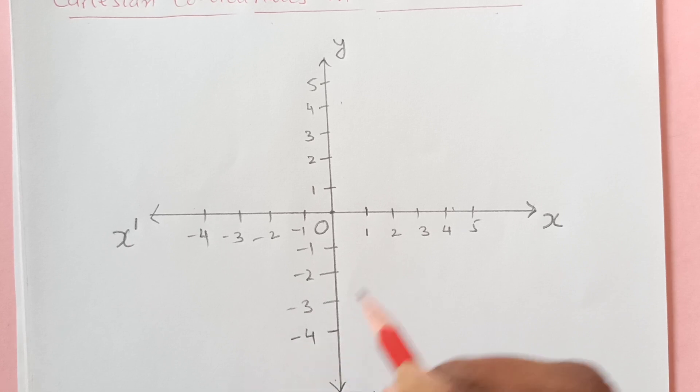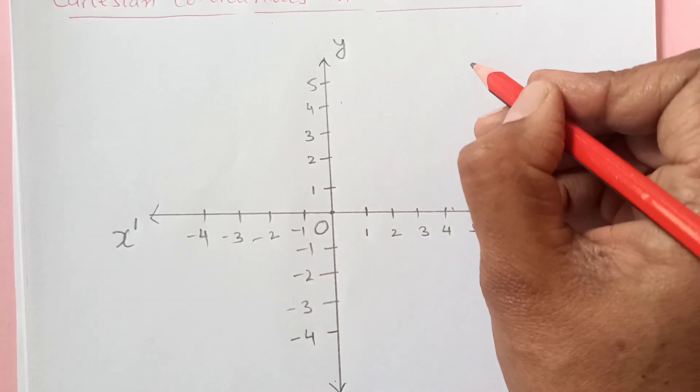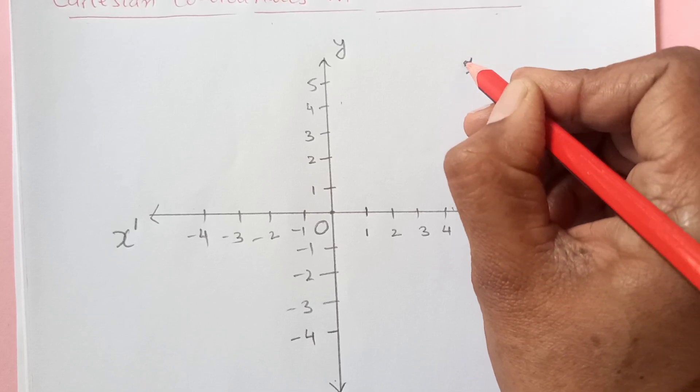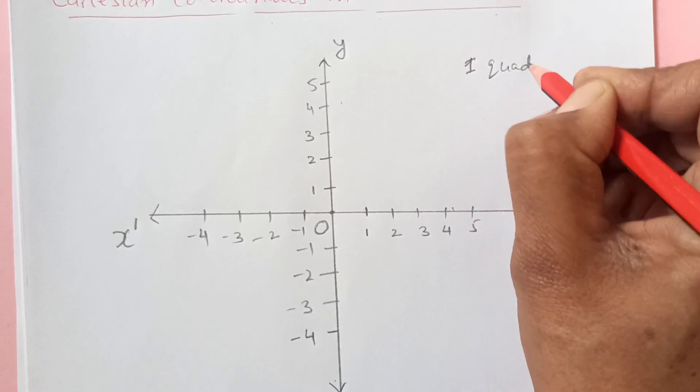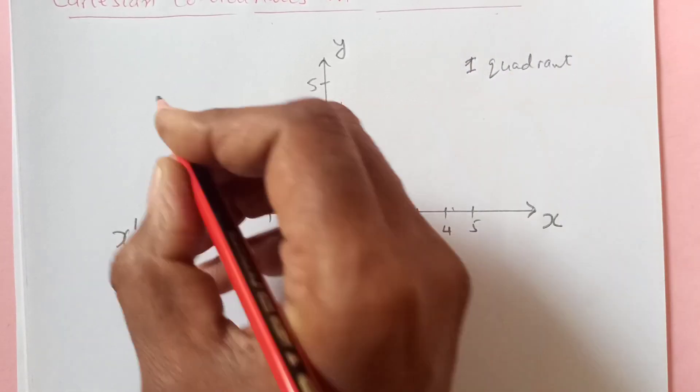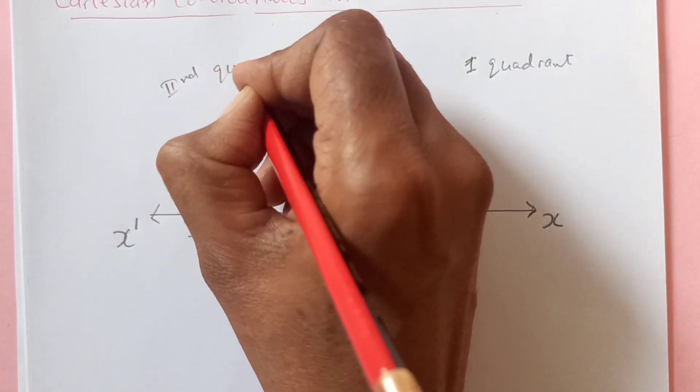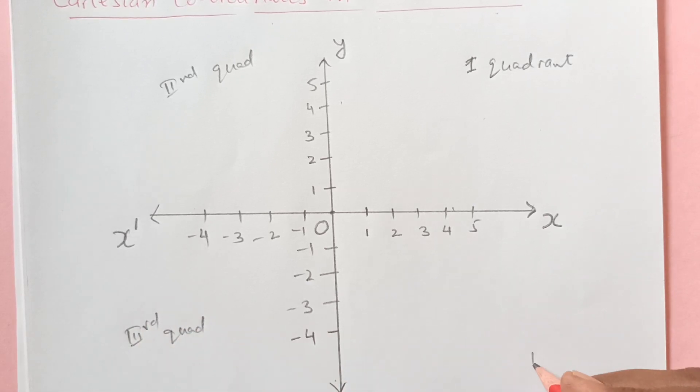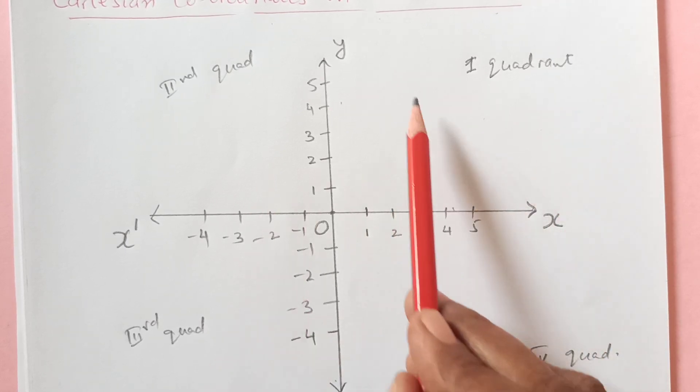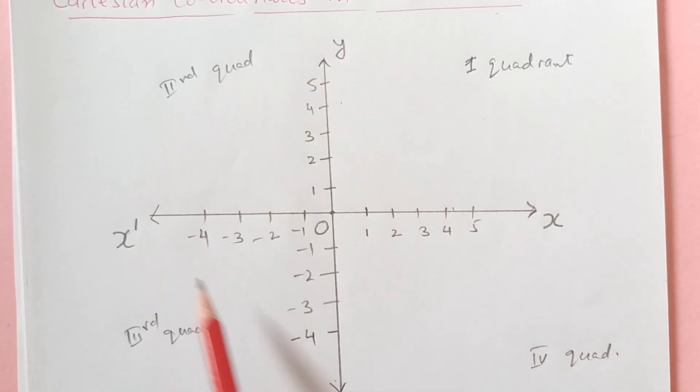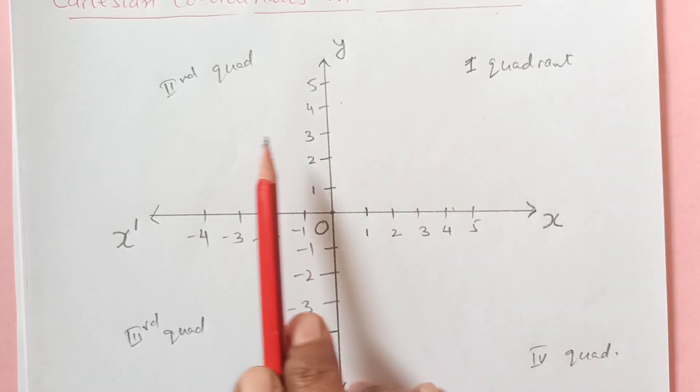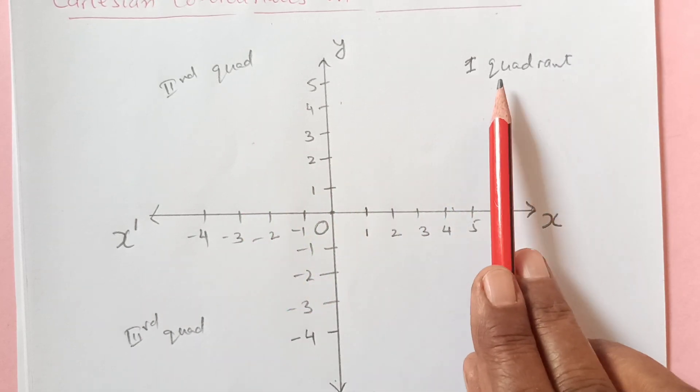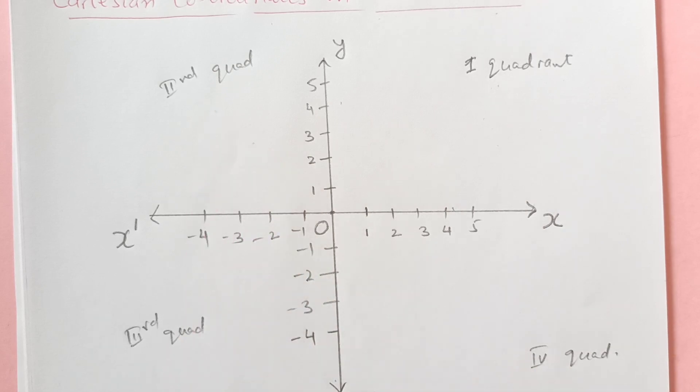So now we have four quadrants. This is first quadrant, this one is second quadrant, this is third, and this one is fourth quadrant. These are called quadrants because you see this is the whole thing 360 and this is quarter of each. So from quarter it became quadrant. First, second, third and fourth.